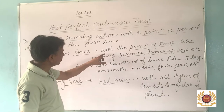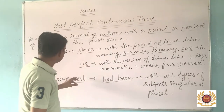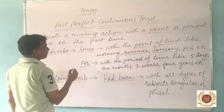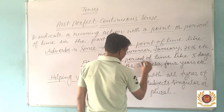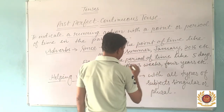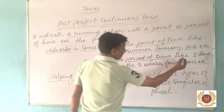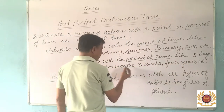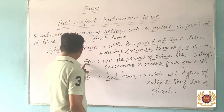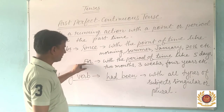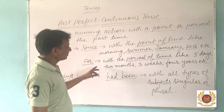The other adverb used in Past Perfect Continuous Tense is 'for'. We use 'for' with a period of time. A period of time is indicated by using 'for', like: five days, two months, three weeks, four years, etc. We use 'for' to indicate a long period that is not particular.